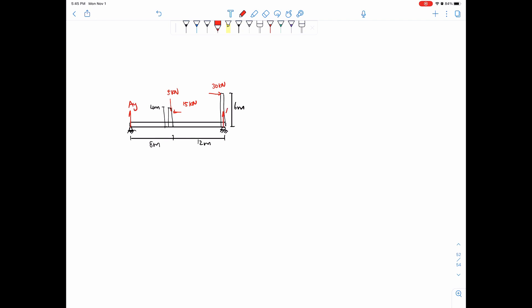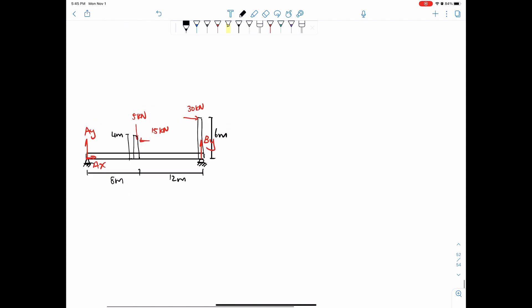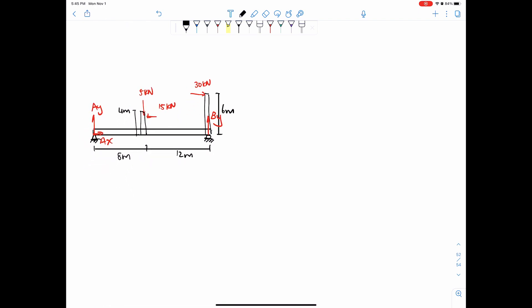Same as always, first just find the reactions. You guys should be pretty familiar with this, but I'll go over this anyway. So Ay, we'll call this By, we'll call this Ax. So since it's not like a perfect beam, there's going to be forces in the x direction. Let's just do sum of x first. We set this way to the right equals positive, and we have Ax minus 15 plus 30. Those are the horizontal forces.